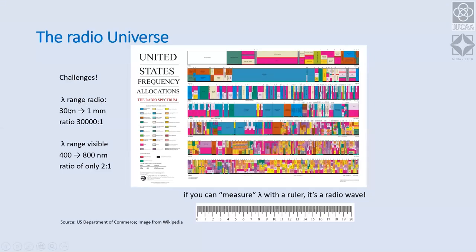A useful rule of thumb: if you can measure the wavelength with a ruler, it's a radio wave. Radio wavelengths range from millimeters to meters — you can measure them with a scale — whereas optical wavelengths of 400 nanometers are not something you could measure with a ruler.